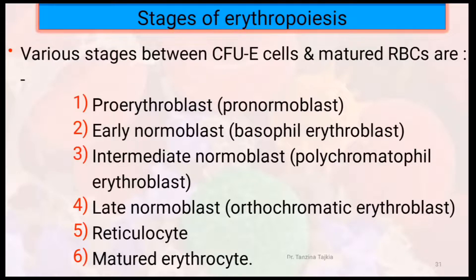The six stages are: proerythroblast, early normoblast, intermediate normoblast, late normoblast, reticulocyte, and lastly mature erythrocyte. Let's discuss each of these points.